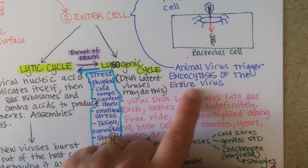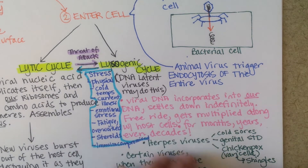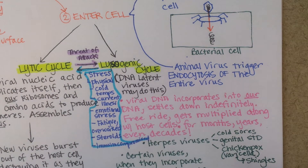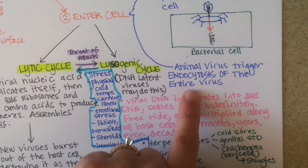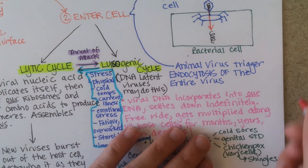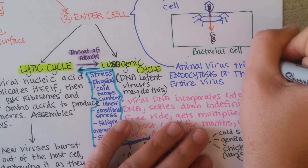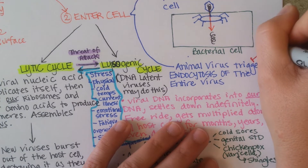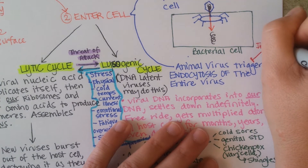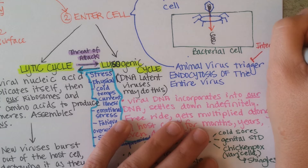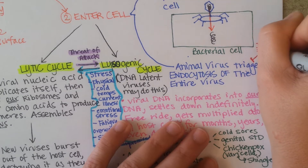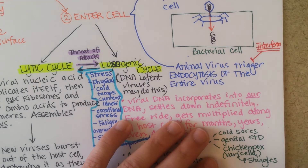Animal viruses — all of these viruses we've been talking about, herpes viruses, rhinoviruses, etc. — need to be endocytosed into our cells. A way that our bodies inhibit that is through a chemical called interferon. Interferon blocks that.